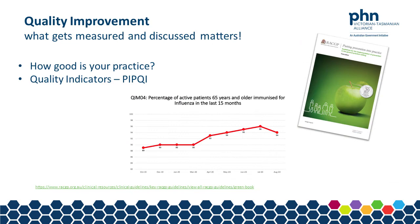Quality improvement — what gets measured matters. The PIP-QI, the Practice Incentive Program Quality Improvement Program, commenced in August 2019. Practices are paid quarterly incentive payments to improve quality improvement initiatives using PDSA — Plan Do Study Act — cycles. The PIP-QI program requires data to be submitted on 10 quality indicators, however the QI initiatives are not limited to these indicators. Evidence of quality improvement activities needs to be retained by the practice. There is also a webinar in this series on this topic.